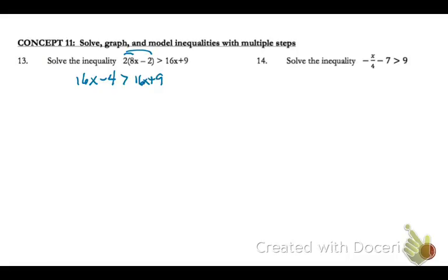Now let's collect variables on one side, so let's subtract your 16x's over. When you do that, you see that your x's will subtract out, so you'll get negative 4 is greater than positive 9. When your variables go away, you look and see, is the statement true? Well, it's not true that negative 4 is greater than 9, so that means that there is no solution for this inequality.